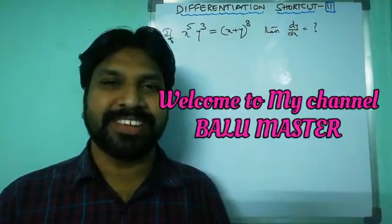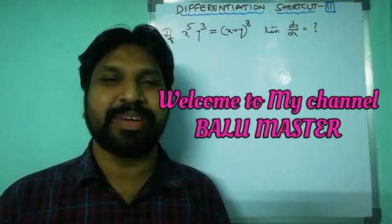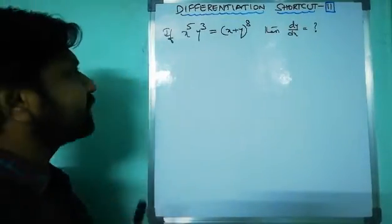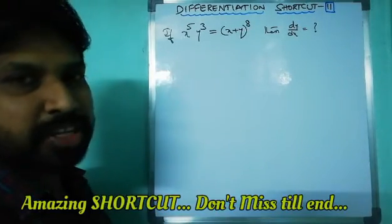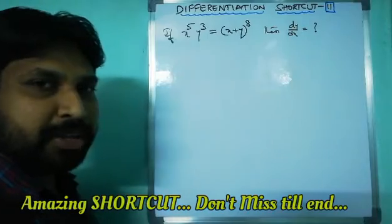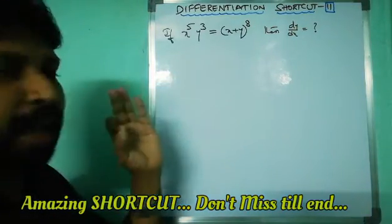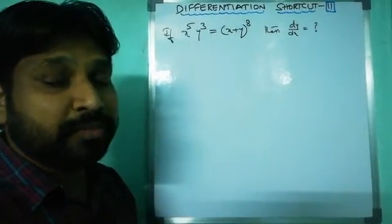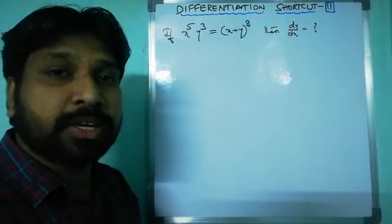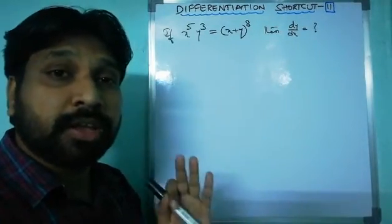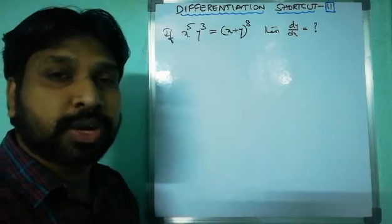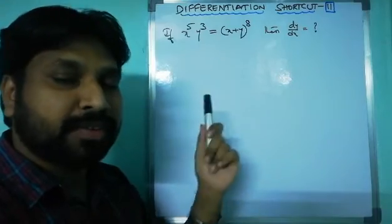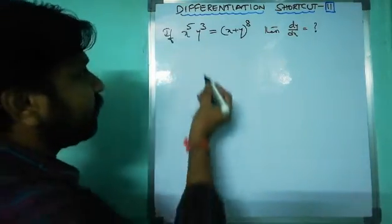Good morning, welcome to my channel Balu Master. Today I'm going to discuss shortcut number 11 on differentiation. The question is: if x to the power 5 times y cubed equals (x plus y) to the power 8, then what is dy/dx? This is an amazing shortcut. This kind of problem is very important for CBSE students studying in class 11th and 12th, so please follow the procedure before I reveal the shortcut.